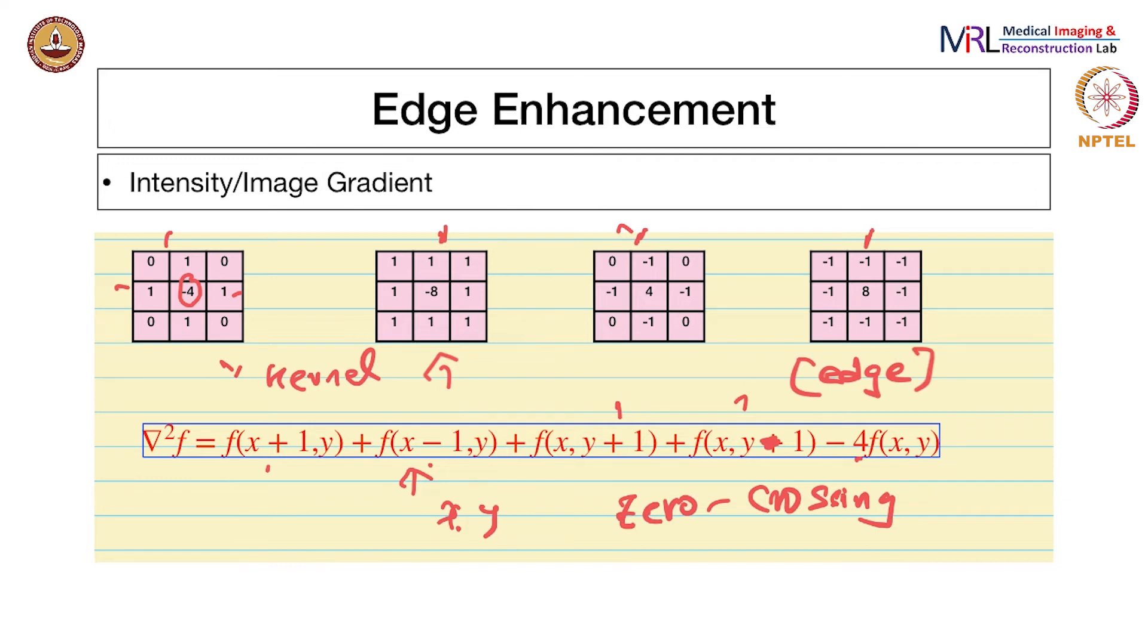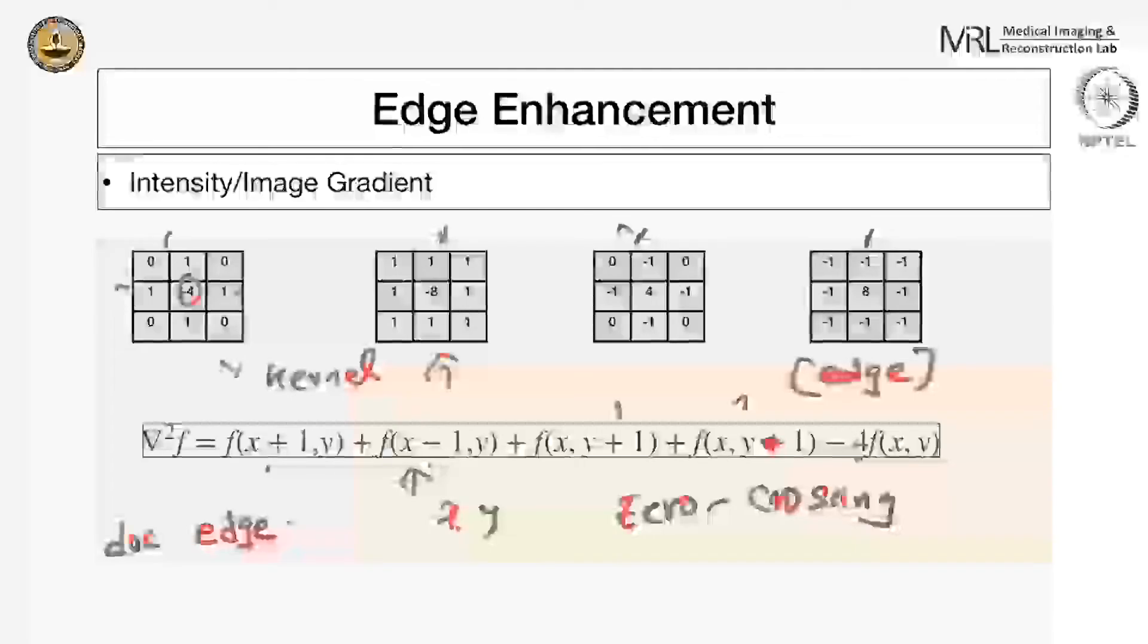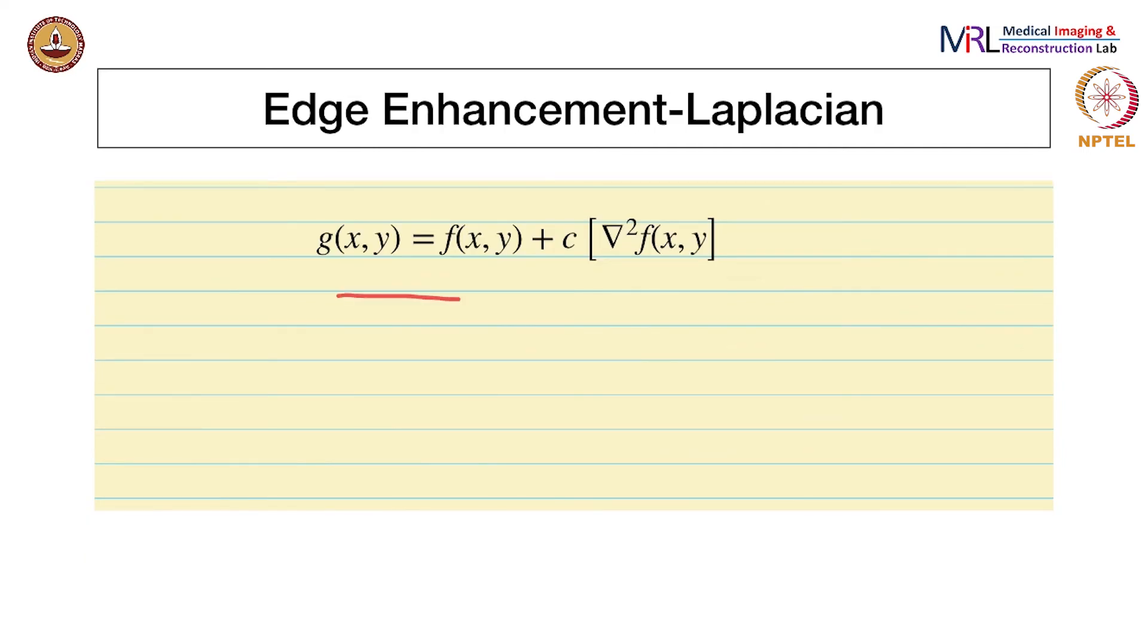In MATLAB, you can use any of these kernels as input to the function called edge. You can type doc edge to see the documentation. One of the modes allows you to use the zero crossing argument - you can input one of these kernels on an image and it gives you a nice edge map. Of course, remember that since images are inherently noisy, there will be a lot of false edges. You'll have to do thresholding to remove false edges and work with the good ones. So please try this function in MATLAB.